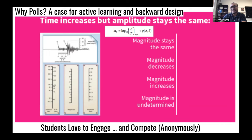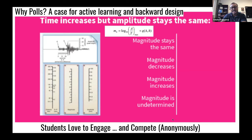Students learn better when they are actively learning and not just sitting and hearing the professor go on and on. Research suggests that when students are actively learning and you design your assessments to promote active learning from your stated goals — doing backward design and incorporating that into your lectures — students will learn better. You also teach better. Students love to engage and sometimes they love to compete: they want to know what the student next to them thinks about a particular question.